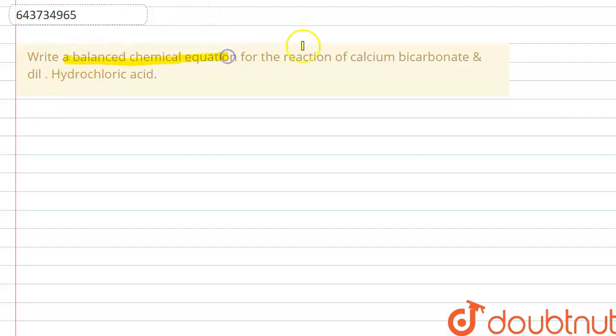a balanced chemical equation for the reaction of calcium bicarbonate and dilute hydrochloric acid. So in this question, they are asking us to write a balanced chemical equation for the reaction that is taking place between calcium bicarbonate, or calcium